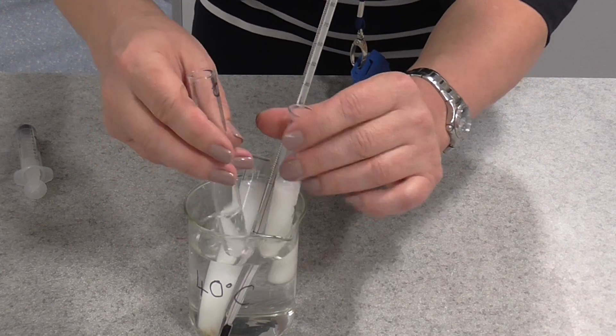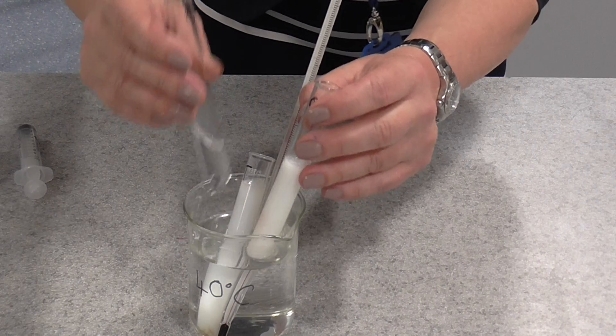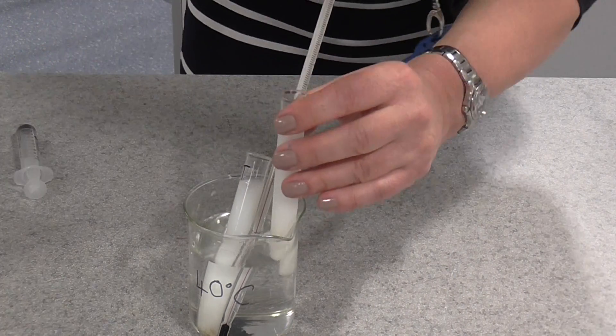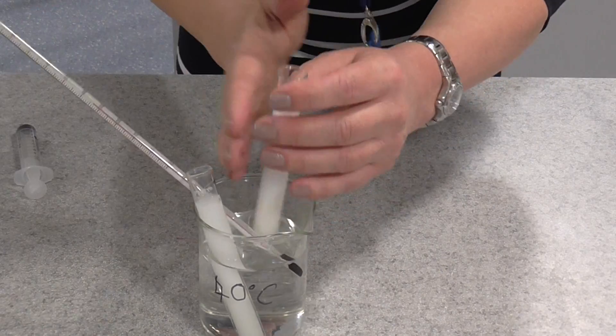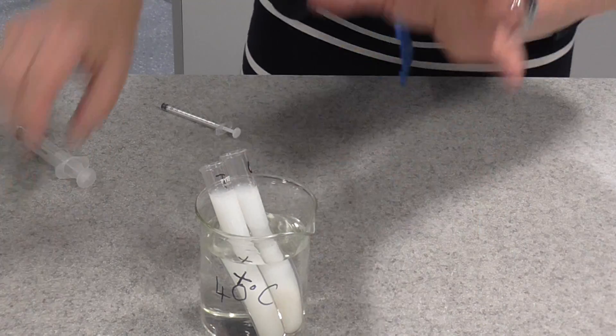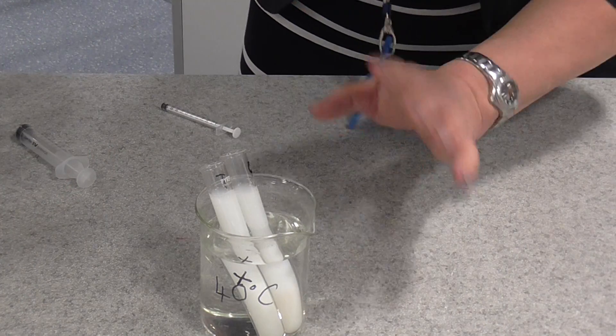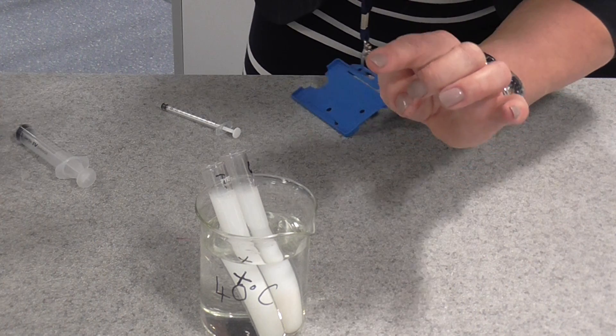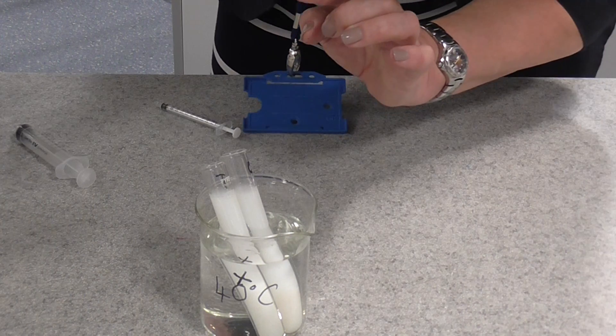And then we're going to do exactly the same with our control tube, which, remember, is exactly the same, but without the trypsin enzymes. We're going to mix them, just roll it between your fingers to give it a little mix, and then you're going to leave them in the water bath. You need to start your timer immediately, as soon as you have mixed the enzyme and the contents. Start the timer.